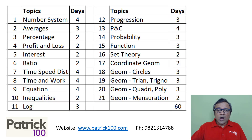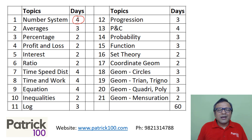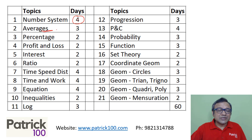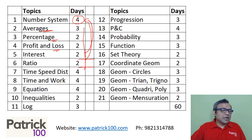How will you divide your time in terms of days for each topic? For example, for number system, you may take four days. Number system is slightly a longer topic with a lot of concepts, but many concepts in number system are not important. I normally recommend students to start with averages, then percentage, profit and loss, and then come later to number system. Finish the first five or six topics, and maybe before you do time, speed and distance, or before you do interest, you can come back to number system and try to solve.